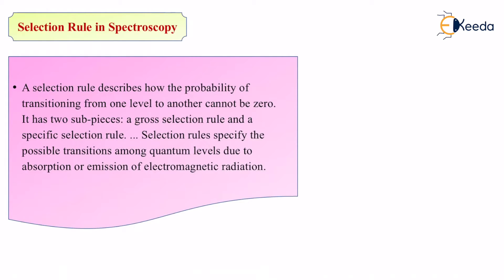Selection rules specify possible transitions from quantum levels due to absorption or emission of electromagnetic radiation. Always remember, transitions will happen when there is absorption or emission of electromagnetic radiation.